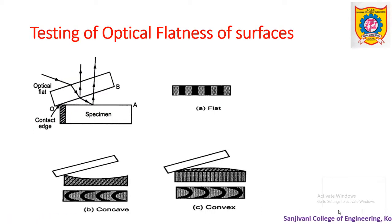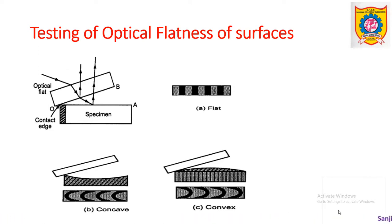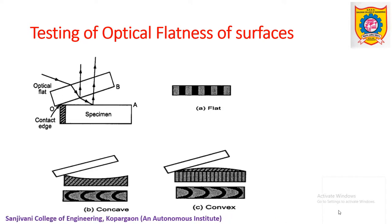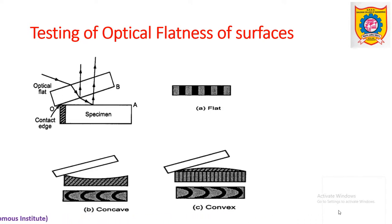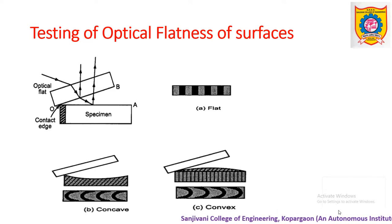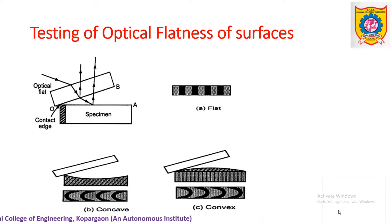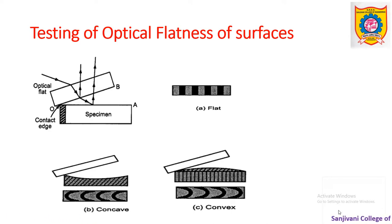Let us see the first one — how can we test optical flatness of surfaces? There are many uses of optical flat surfaces in day-to-day life, such as in optics laboratories or in mechanical engineering. The surfaces may appear flat to our hands or eyes, but they may not actually be optically flat. Whether a given surface is optically flat or not can be tested with the help of interferometry.